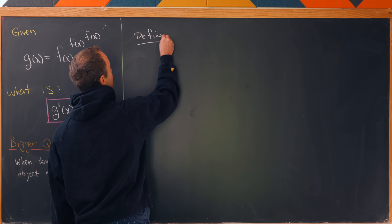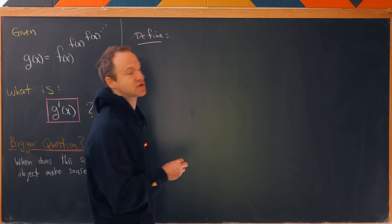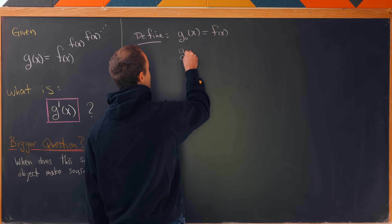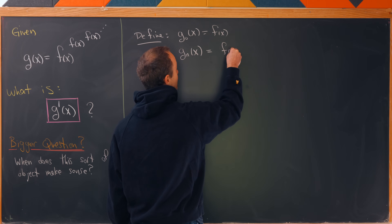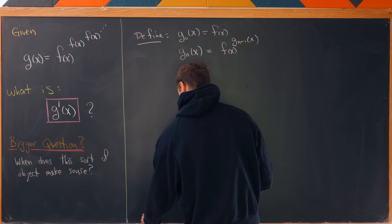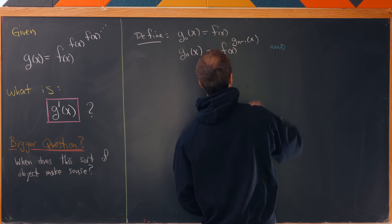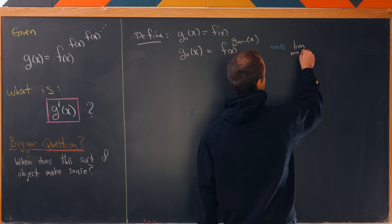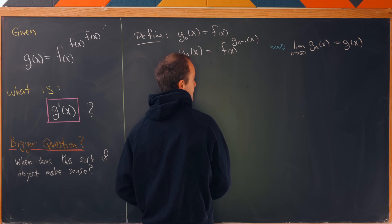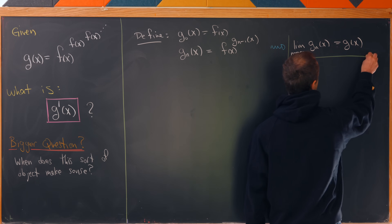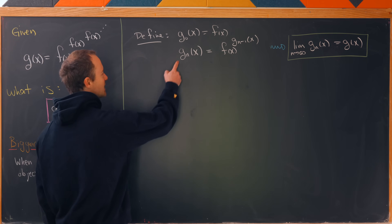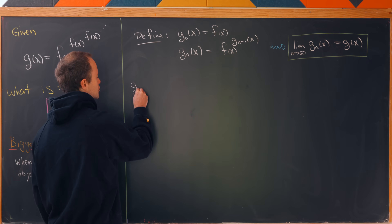The first thing I'd like to do is introduce a recursively defined sequence of functions. Let's say g sub 0 of x equals f of x, and g sub n of x equals f of x to the power g sub n of x. The limit as n goes to infinity of g sub n of x is precisely g of x — that's the proper way of defining this infinite power tower as the limit of the sequence of nested exponentiations.